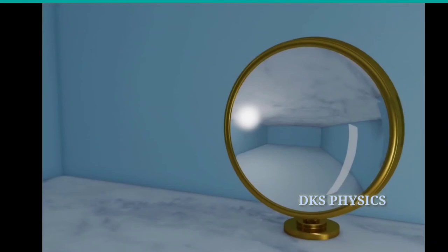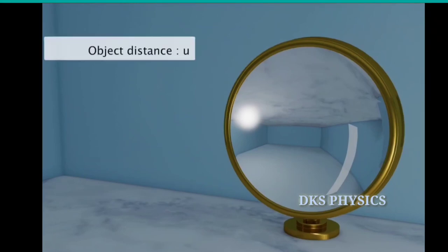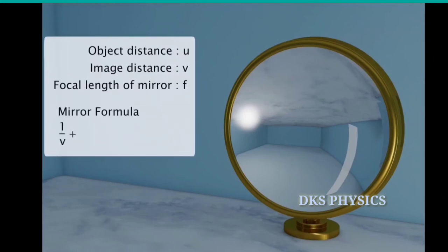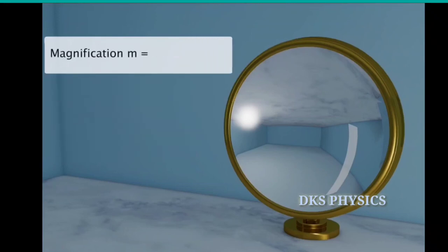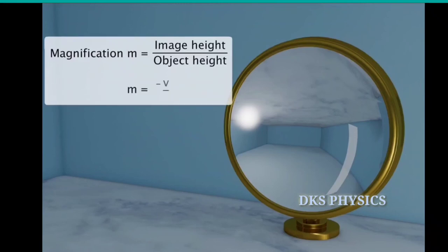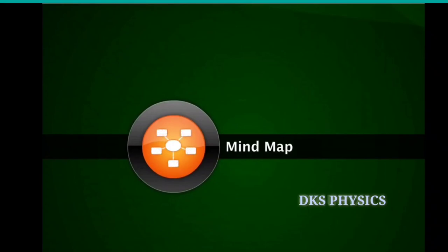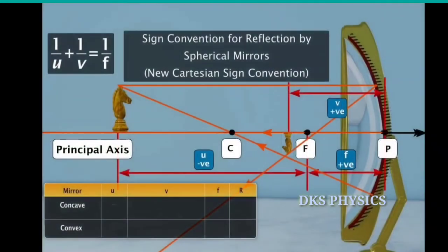The position and size of the image can also be computed numerically using the mirror formula and magnification. The mirror formula gives the relation between object distance, image distance, and focal length: 1/v + 1/u = 1/f. Magnification is defined as the ratio of image height to object height, and is also expressed as m = -v/u. For a concave mirror, u, f, and R are always negative, and v can be positive or negative.